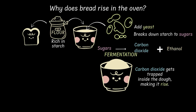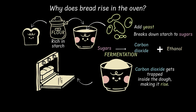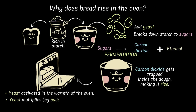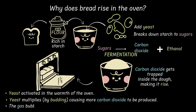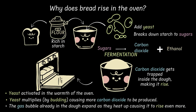Now let's send this dough into the oven. At first, the oven is hot but not too hot — the yeast isn't killed right away. In fact, it gets super active. The warmth pushes the yeast into overdrive, and it multiplies by a cool method called budding, which we'll talk about later. More yeast means more carbon dioxide. Meanwhile, the gas bubbles already in the dough expand as they heat up, adding to the rise even more.